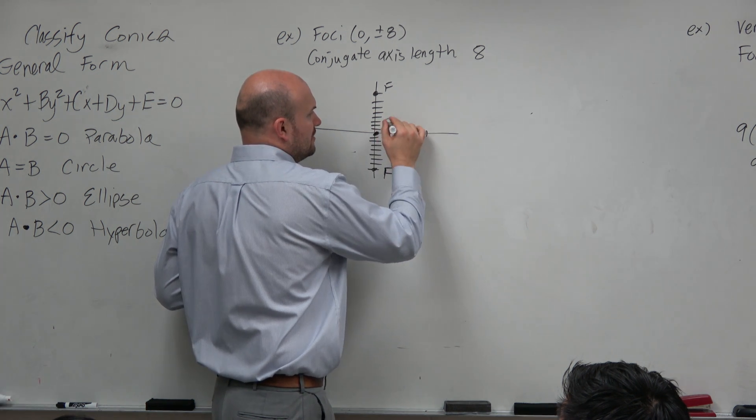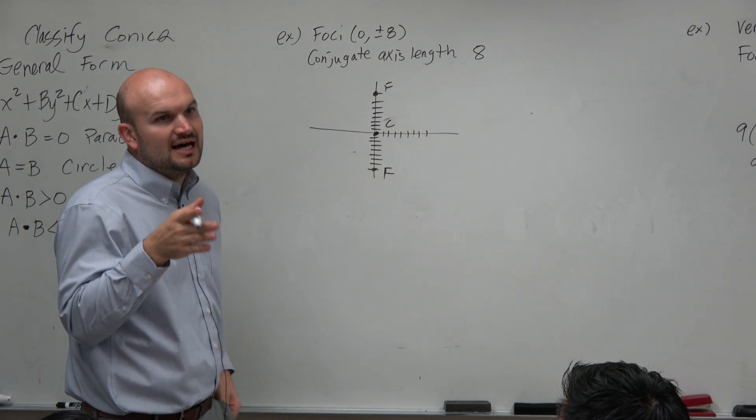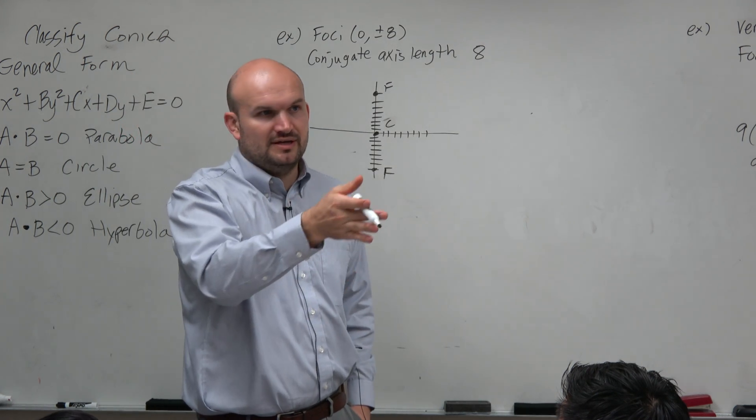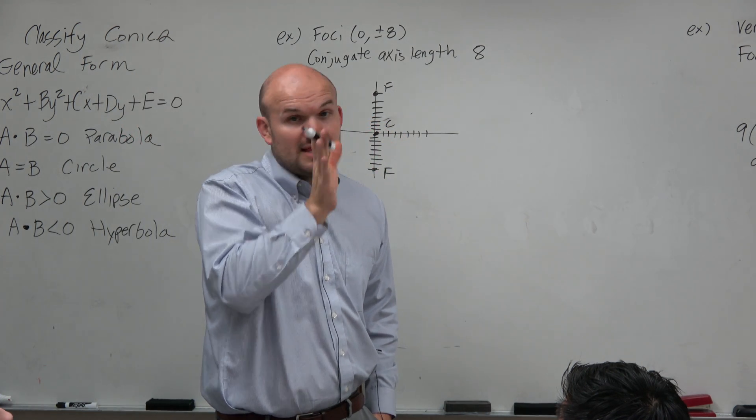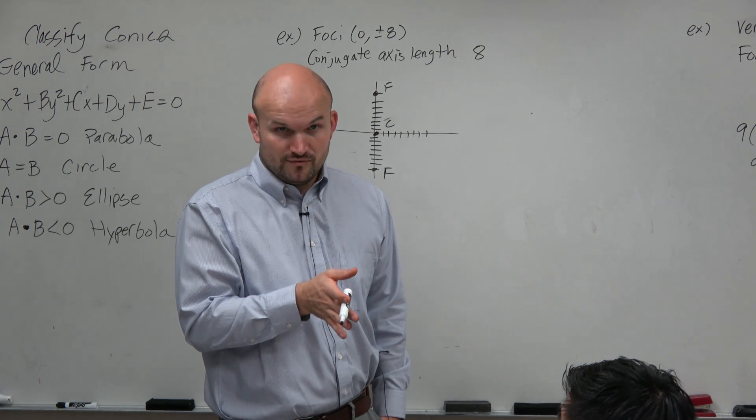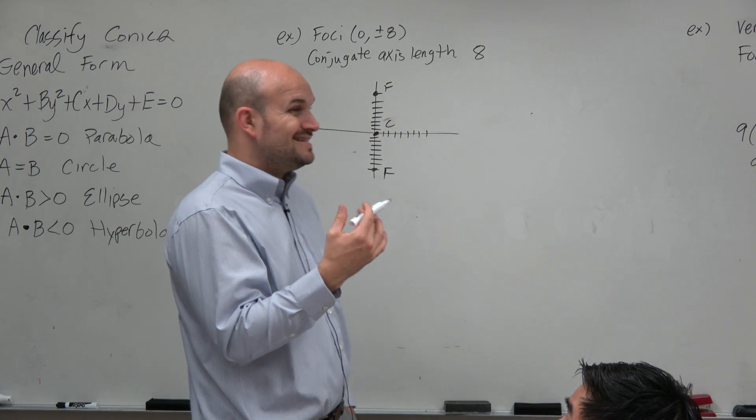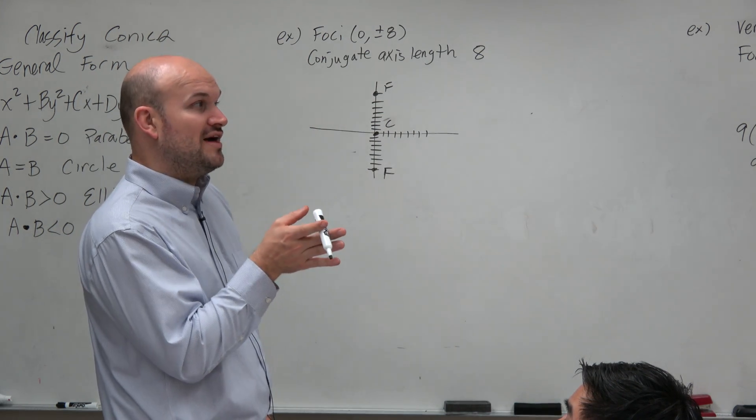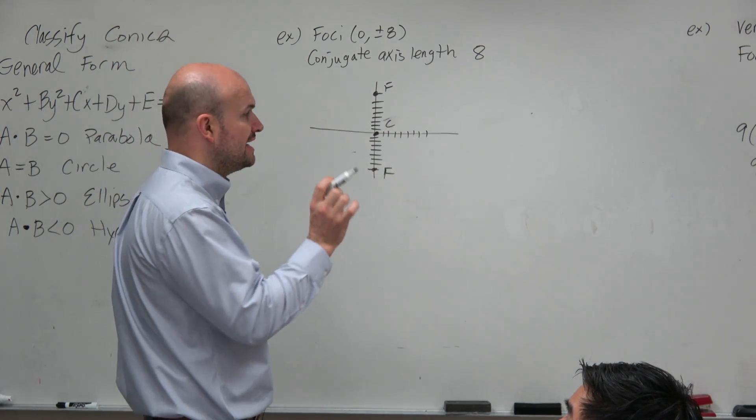Then also, I know that the foci lie on the, do we have open seats up here if you guys need? We have the foci lie on the transverse axis. So therefore, the transverse axis has to be vertical. And since the transverse axis is vertical, that means my a squared is going to be under my y.